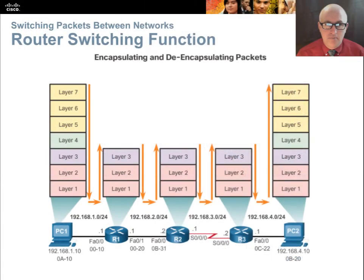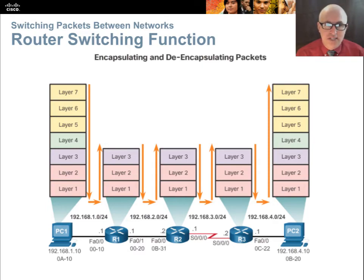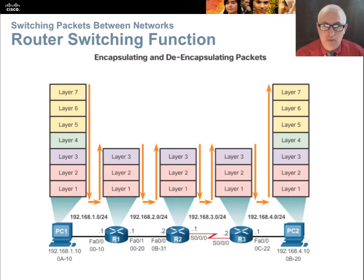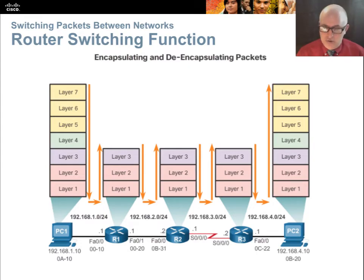Our next section is routing decisions. Switching packets between networks: routers have two jobs — one is to make a best path decision, and the other is a switching function where they encapsulate and de-encapsulate the packet. The PC starts at layer 7, goes down through all the layers to layer 1, shoots the packet out the interface, it arrives at router one, and router one de-encapsulates it until it can read layer 3. It makes a routing decision, chooses an exit interface, re-encapsulates, and sends it out. This is repeated at router two and router three, and then at PC2 it moves up the stack from layer 1 all the way to layer 7.